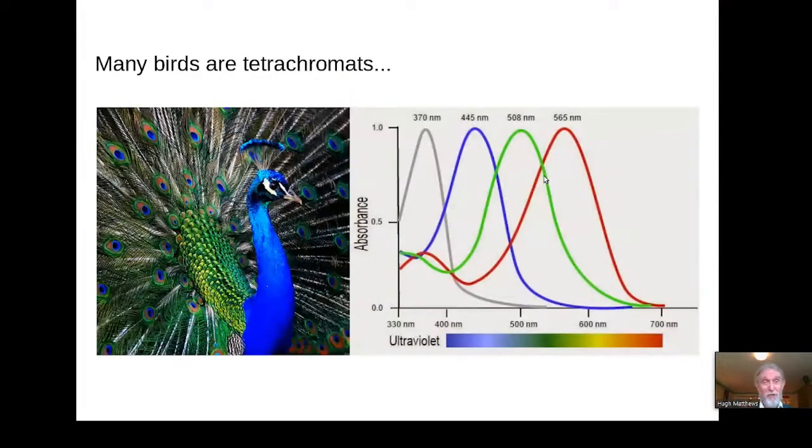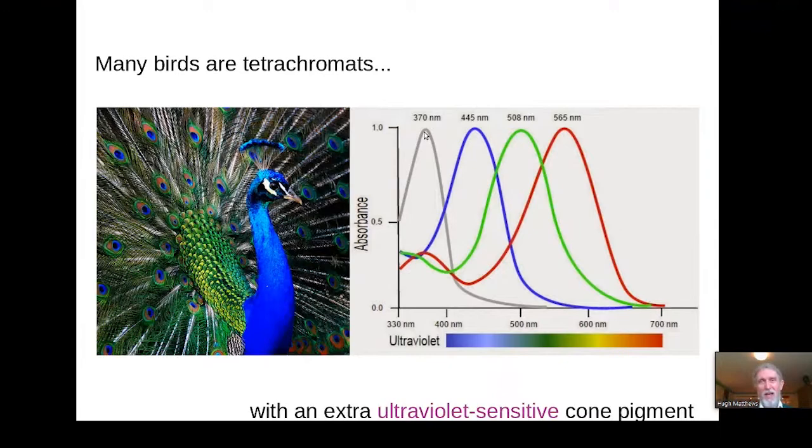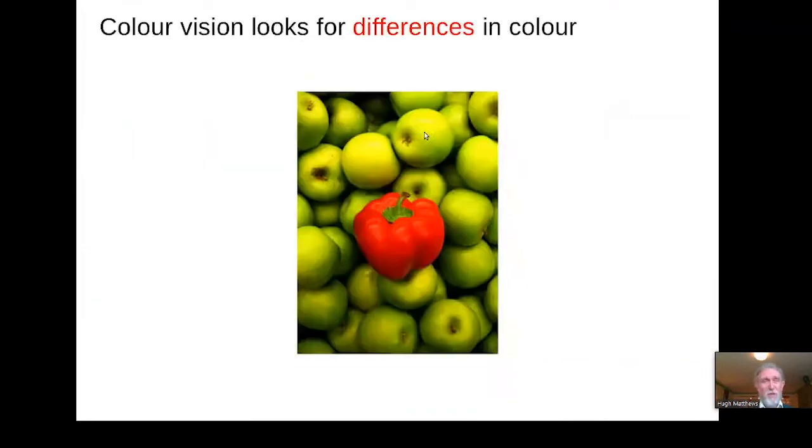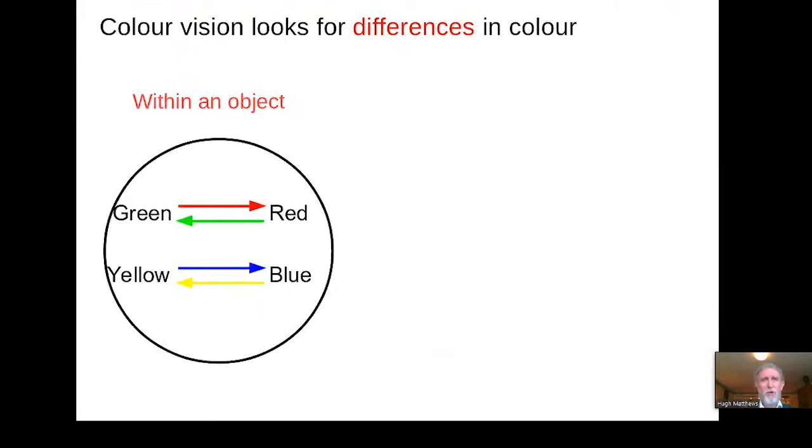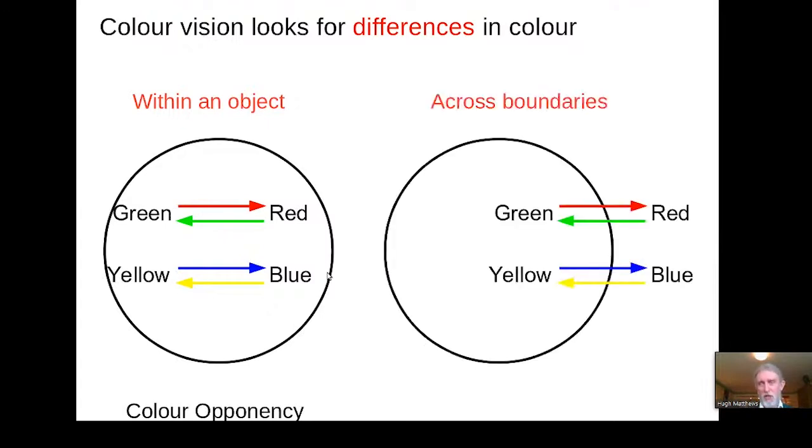Many birds, in contrast, are tetrachromats. Tetra meaning they have four cone classes and they have an extra pigment in the ultraviolet, allowing them to see even richer colours than we can. So colour vision is looking for differences in colour, and there are two different ways in which it might do so. It can look for differences within an object. Is a particular region a bit greener or a bit redder, or a bit yellow or a bit bluer? We would call this colour opponency within an object. Alternatively, it can look across the boundaries of an object between the object and its background, such as the situation with my red pepper on the bed of green Granny Smith apples. Is the object redder or greener than its background, or yellower or bluer than its background? This is referred to as colour contrast.